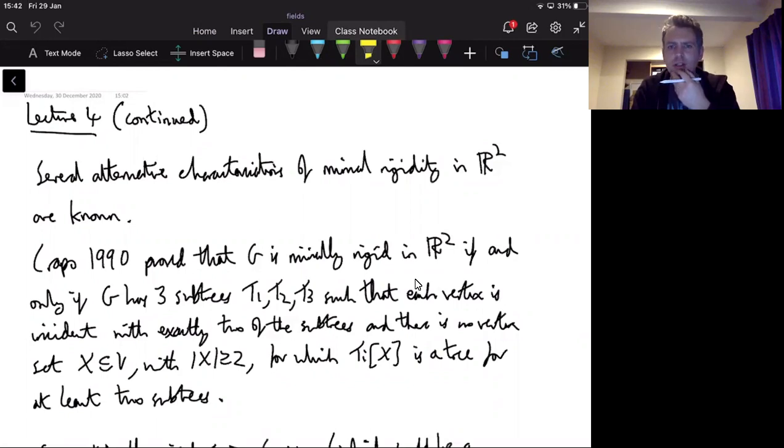We characterize generic rigidity in two-dimensional space, and we characterize it as minimal rigidity being two-free-tight graphs. So I wanted to point out, I'm not going to prove, but point out alternative equivalent combinatorial characterizations.